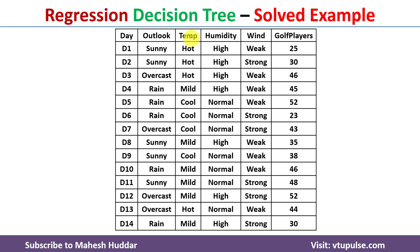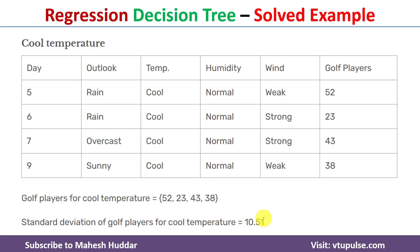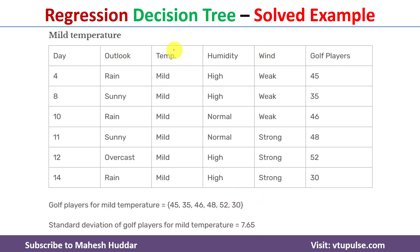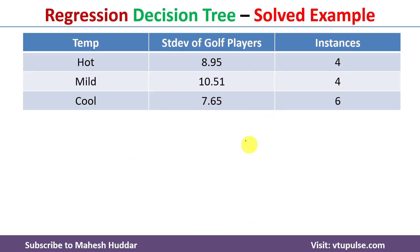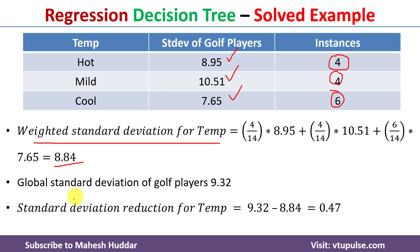Now we consider the second attribute, Temperature, which has three possibilities: hot, mild, and cool. When temperature is hot, there are four examples and the standard deviation is 8.95. When temperature is cool, there are four examples and the standard deviation is 10.51. When temperature is mild, the standard deviation is 7.65. The weighted standard deviation for Temperature is calculated as (4/14 × 8.95) + (4/14 × 10.51) + (6/14 × 7.65), which equals 8.84.